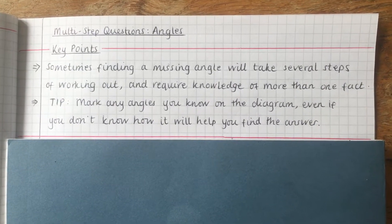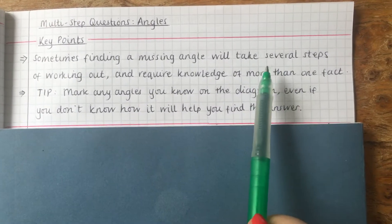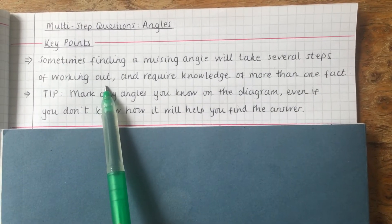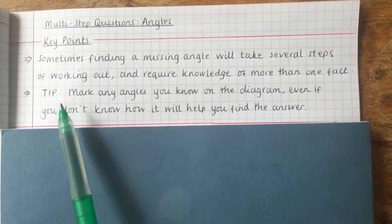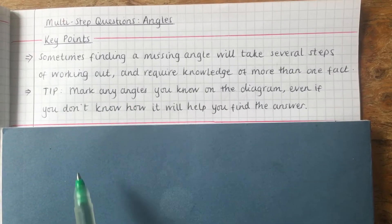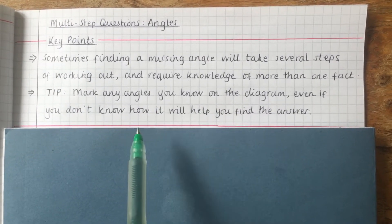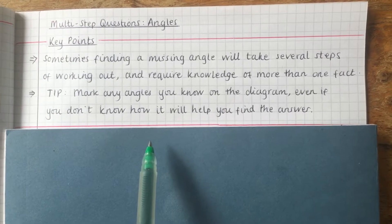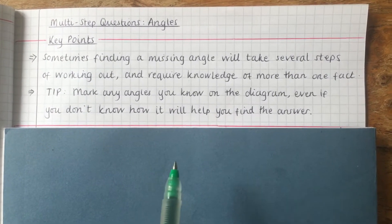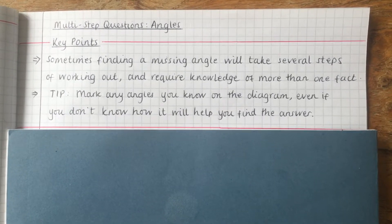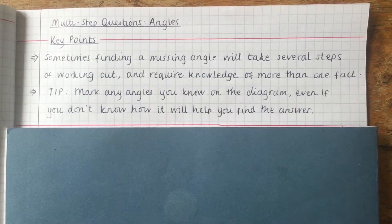In this video we're going to be looking at what we call multi-step questions, where you'll need to often take several steps of working out, and it requires knowledge of more than one angle fact. A top tip for this is to mark any angles on the diagram that you know or can work out, even if you're not sure how it will help you find the final answer. Because in an exam that will help you gain some marks, and often after you've found a couple of angles, you can see how to find the one you're really looking for.